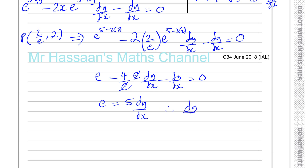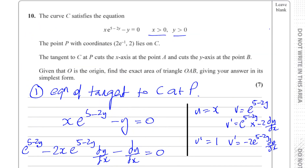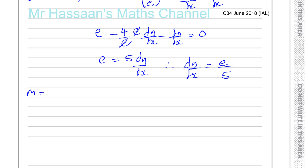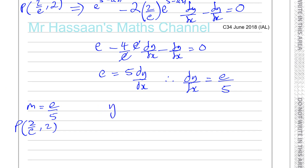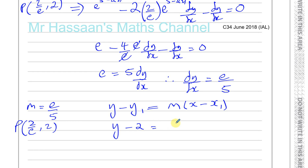That means it has a positive gradient. We know the gradient is e over 5, and we know it passes through the point 2 over e and 2, that's the point P. So let's use the equation of a straight line: y minus y1 equals m times x minus x1. We can say y minus 2 equals e over 5 times x minus 2 over e.